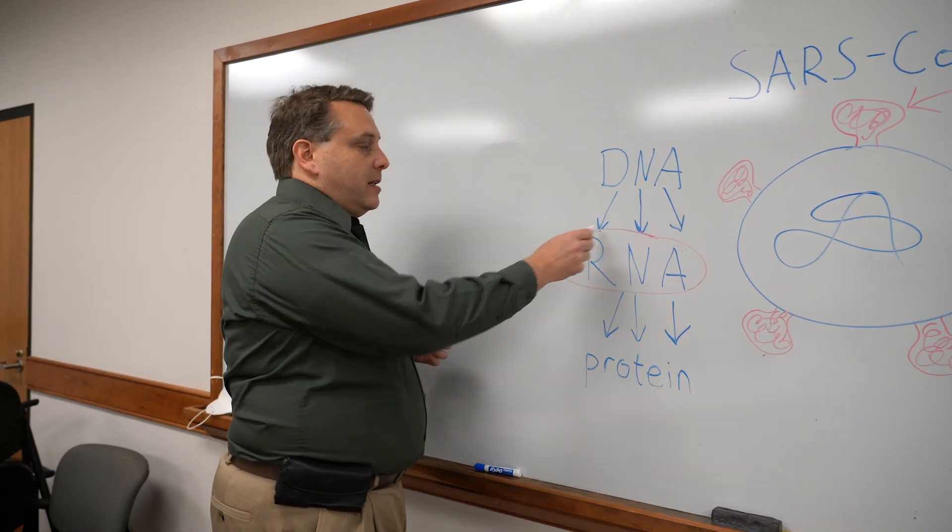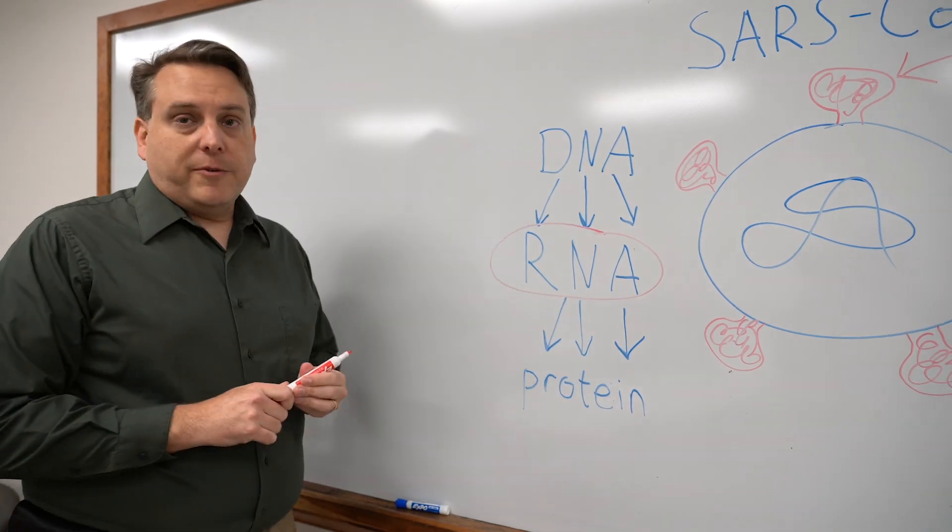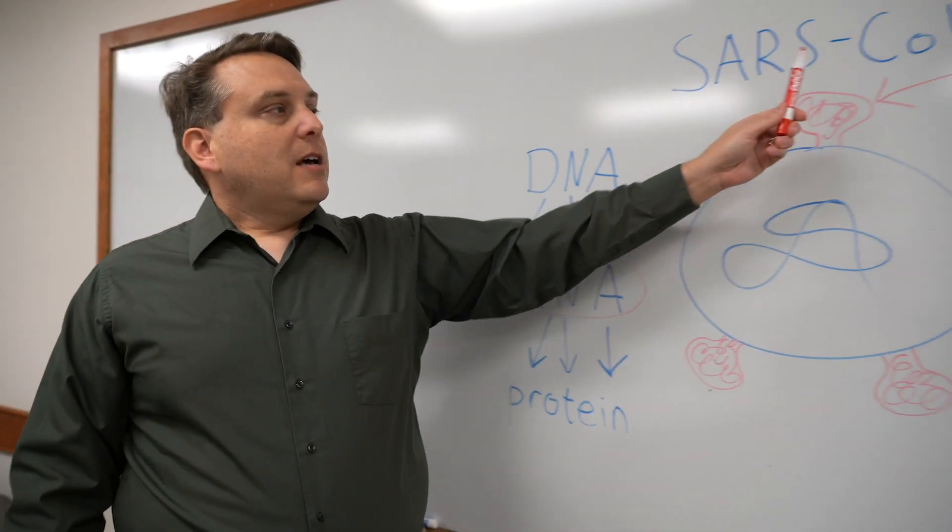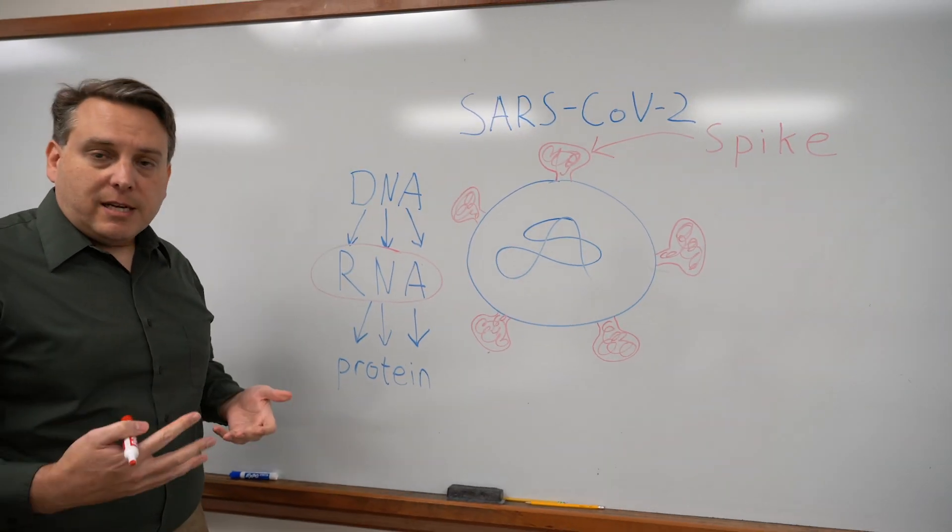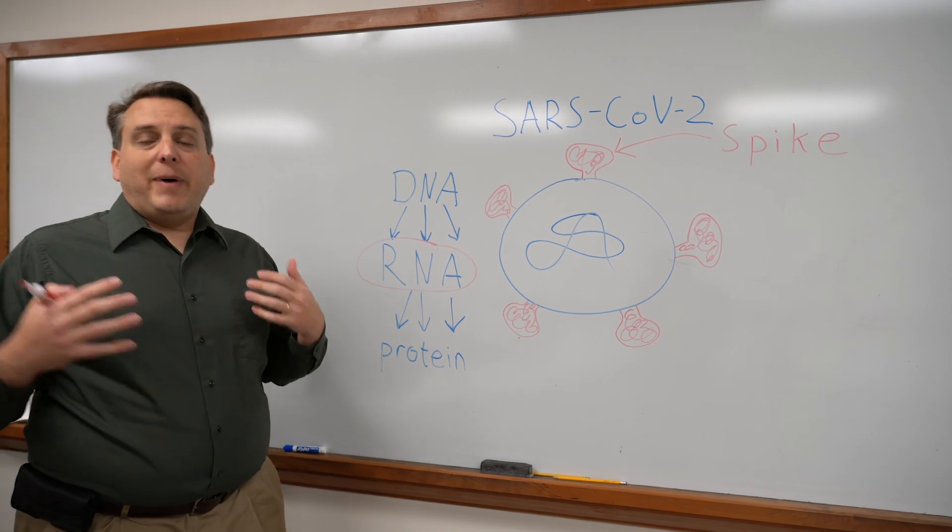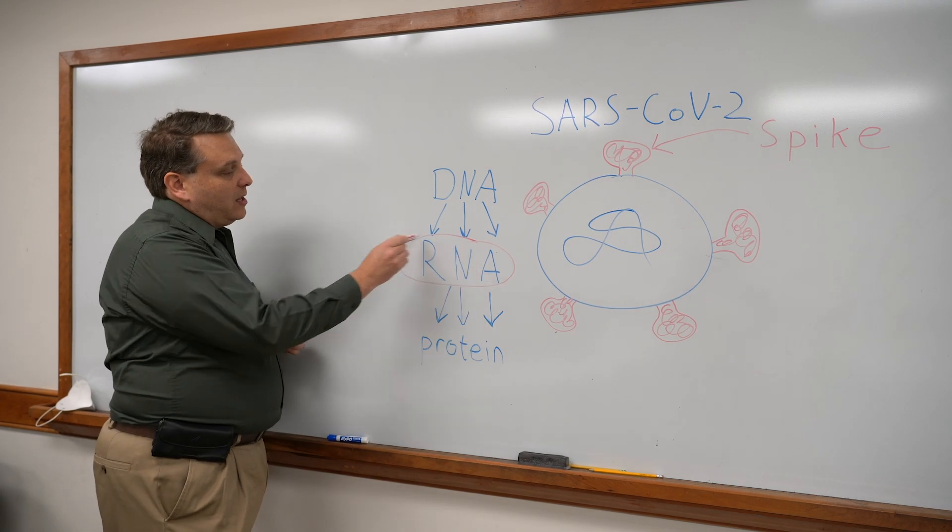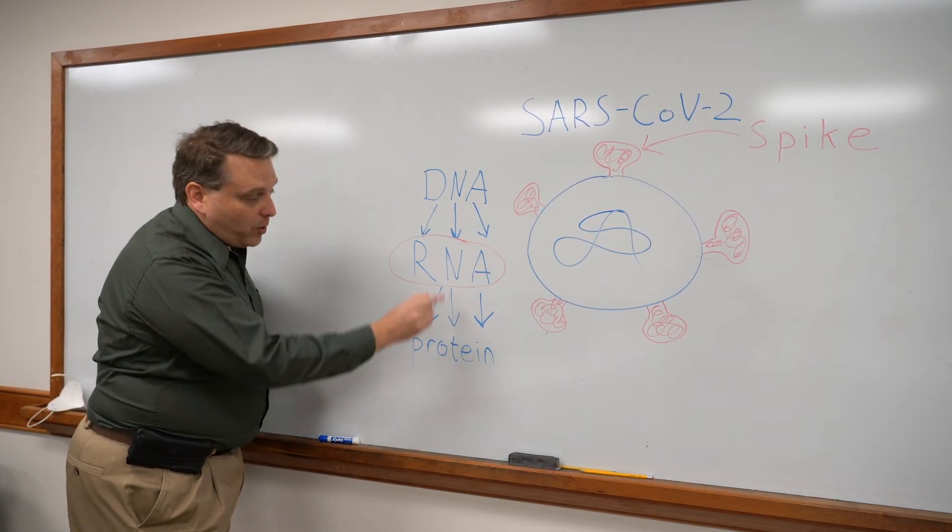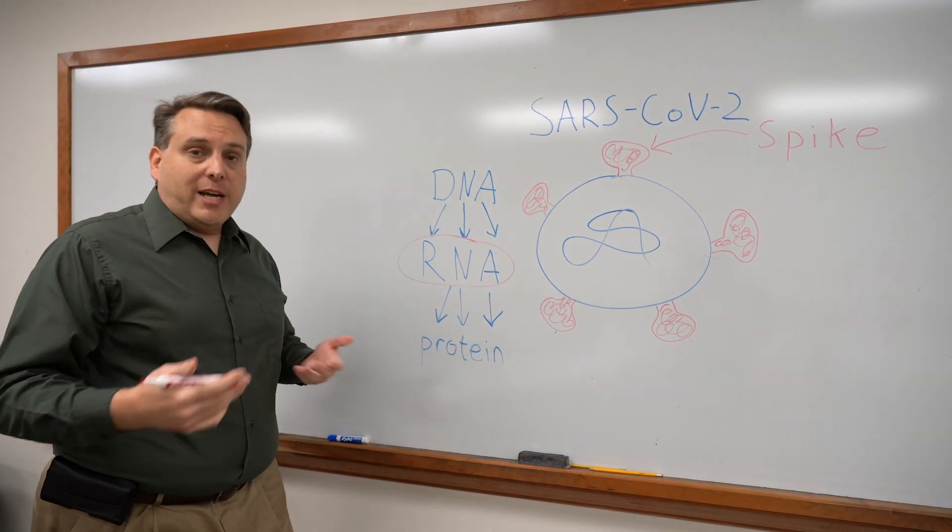Since the Moderna vaccine is RNA and only includes instructions for the spike protein, it cannot make infectious copies of the SARS-CoV-2 virus. So it cannot give you COVID-19. It cannot pass COVID-19 on to other people around you. Additionally, since your cell does not have ways to convert RNA back into DNA, it only goes one way, then the Moderna and Pfizer vaccines cannot alter your genetic code.